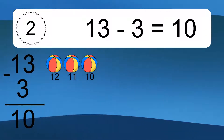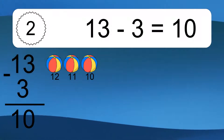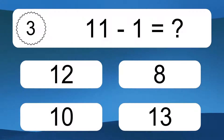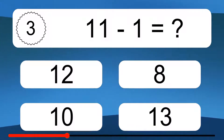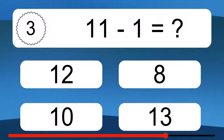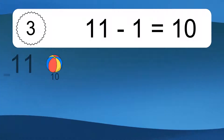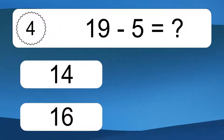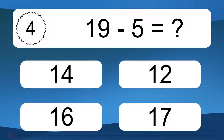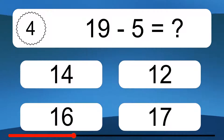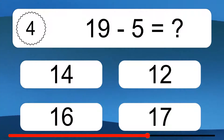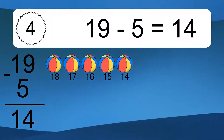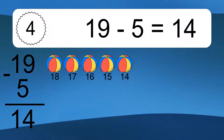13 minus 3 equals 10. Let's count it: 12, 11, 10. 11 minus 1 equals what? 11 minus 1 equals 10. Let's count it: 10. 19 minus 5 equals what? 19 minus 5 equals 14. Let's count it: 18, 17, 16, 15, 14.